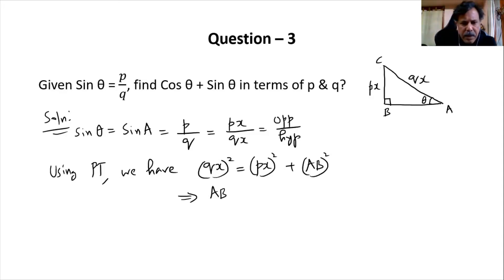AB square should be qx the whole square minus px the whole square. Or I can rewrite it as AB should be equal to square root of qx the square minus px the square.